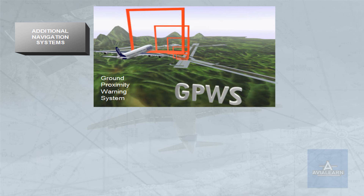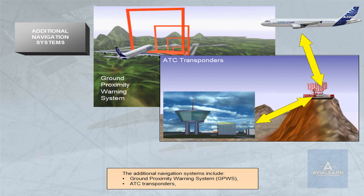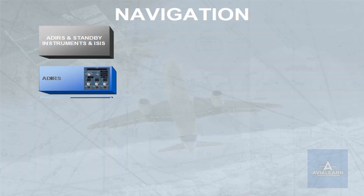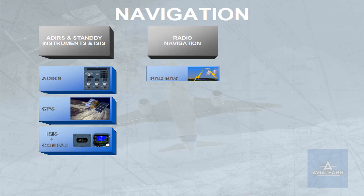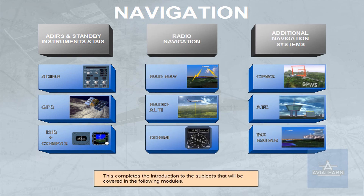The additional navigation systems include ground proximity warning system (GPWS), ATC transponders, and weather radar. This completes the introduction to the subjects that will be covered in the following modules.